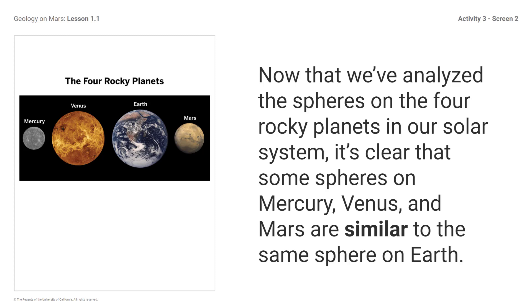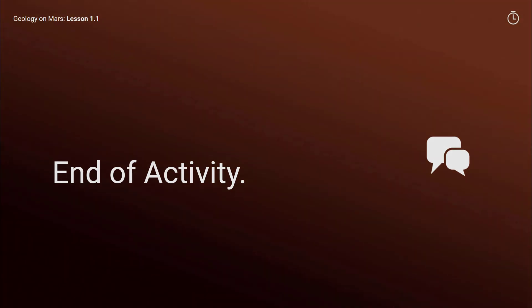Did you notice that Earth and Mars have similar geospheres? There is evidence that volcanoes once erupted on Mars. Mars also has frozen water at its poles, which makes it the only other rocky planet to have water other than Earth. These similarities suggest that Mars could be the best rocky planet in our solar system to search for evidence of life. End of activity — be sure to complete all your student work in Amplify for this activity before moving on.